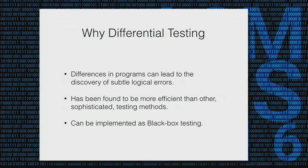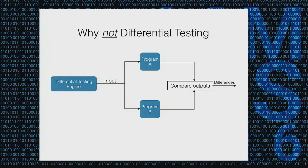Differential testing has been found to be more efficient than other sophisticated methods. For example, black box differential testing was found much more efficient than software model checking or concolic execution for a Mars rover. One reason is you can implement it as a black box testing technique and just throw inputs very fast. The problem with traditional differential testing, though, is that there is no feedback loop — even though the outputs of the program can provide meaningful information to guide the rest of the testing.